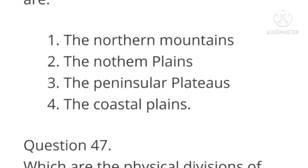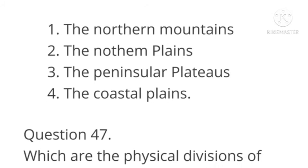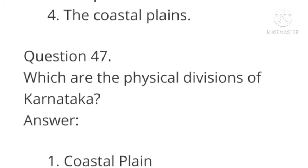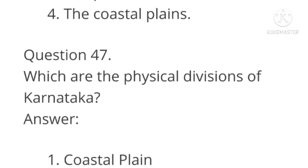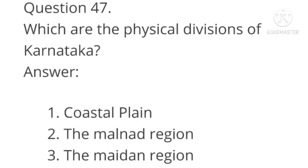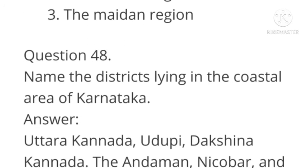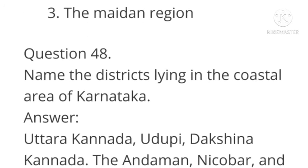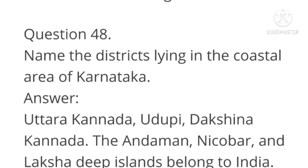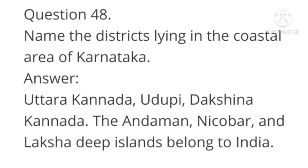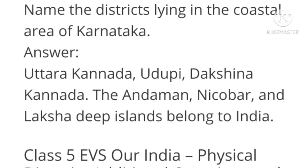Which are the physical divisions of Karnataka? Answer: The coastal plain, the Malnad region, and the Maidan region. Next question: Name the districts lying in the coastal area of Karnataka. Answer: Uttara Kannada, Udupi, and Dakshina Kannada. The Andaman & Nicobar and Lakshadweep islands belong to India.